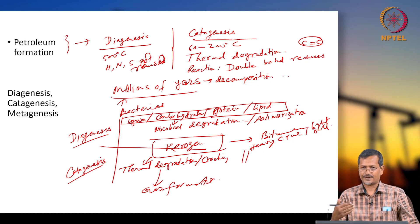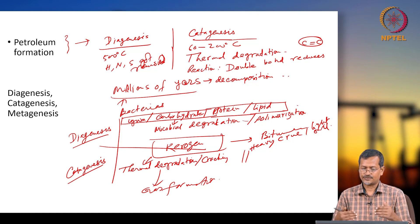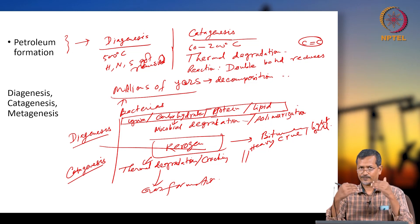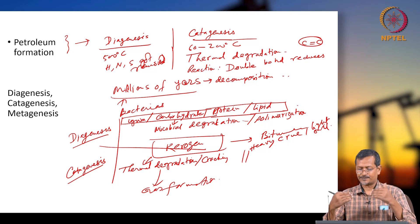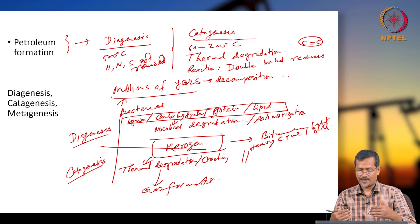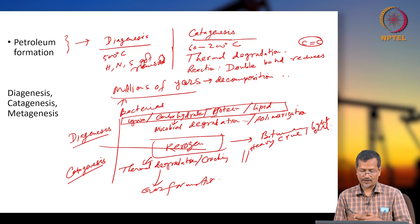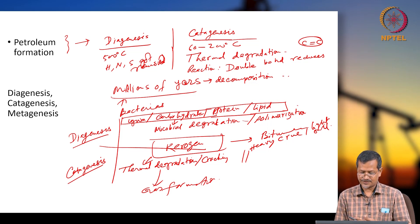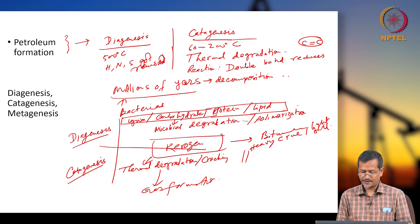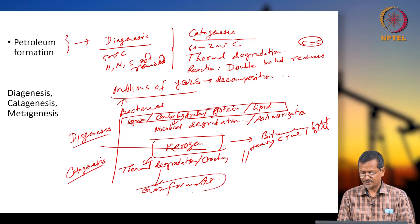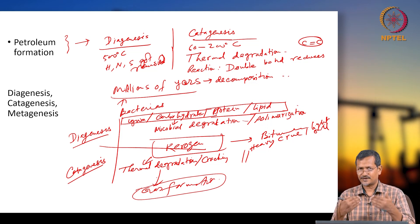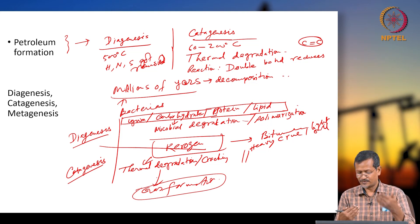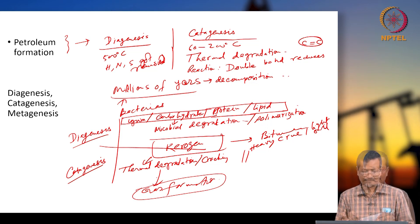First, diagenesis happens with microbial degradation. Then with temperature and pressure, thermal cracking happens in the catagenesis stage, and then you are getting gas formation. If you go further with time and temperature, you can even get diamond.